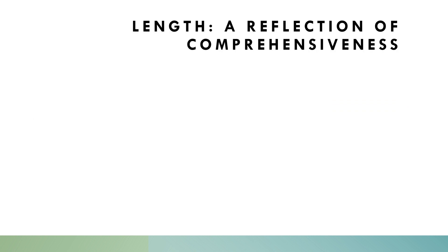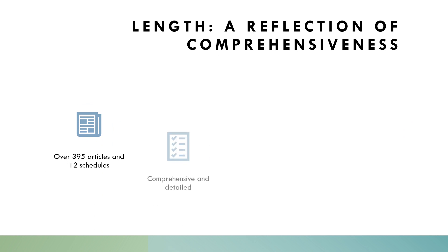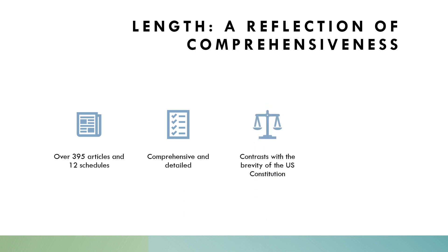The sheer length of the Indian constitution, exceeding 395 articles and 12 schedules, might seem daunting at first glance. However, it is a testament to its comprehensiveness. Unlike the briefness of the US constitution, which relies on amendments and judicial interpretations to address evolving needs, India's constitution attempts to be a self-contained rule book for governance.